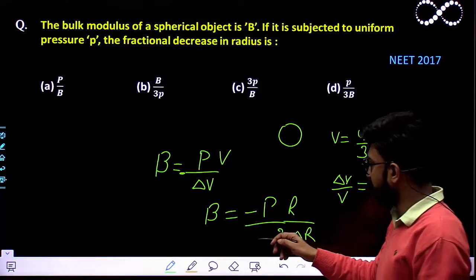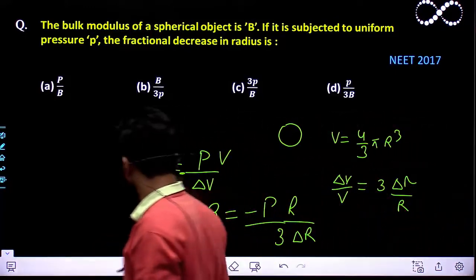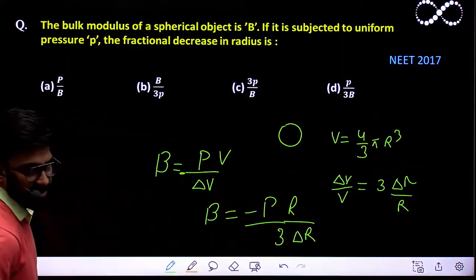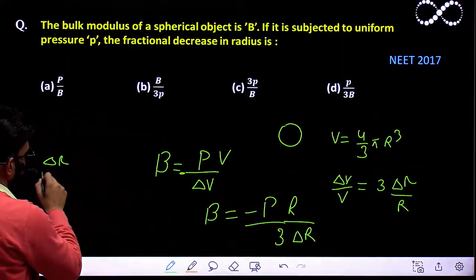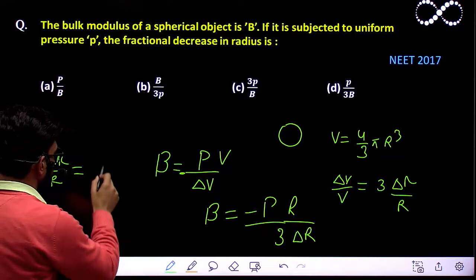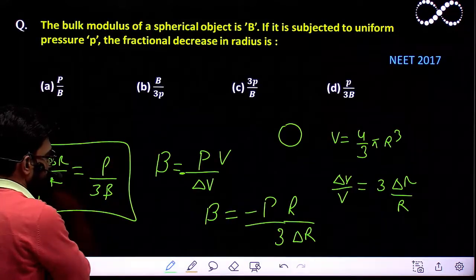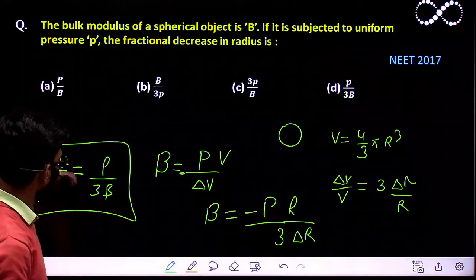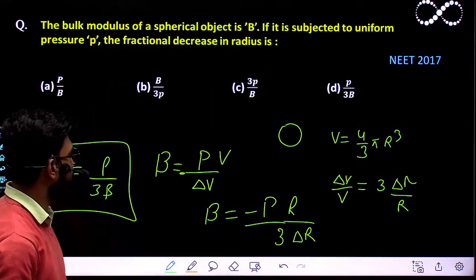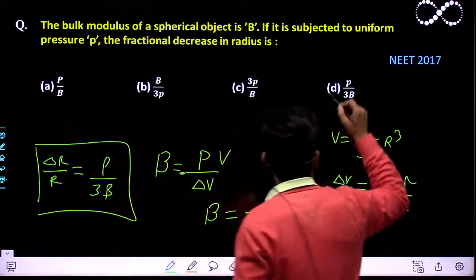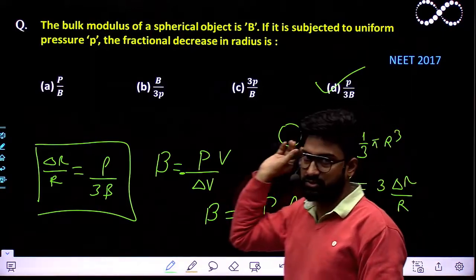If I talk about only magnitude, the magnitude of the fractional change in radius is given by del R by R, which comes out to be P by 3B. So the final answer that we are getting is P by 3B, which is option D, the correct option.